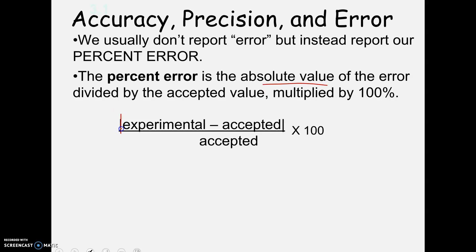In other words, it's going to be the absolute value of your value. Experimental, remember, is what you got. Minus the accepted value, which this is, remember, this would be the one that's published. And then divide that by the accepted times 100.